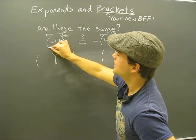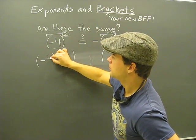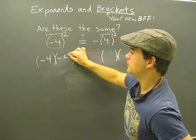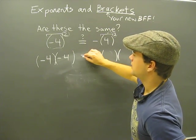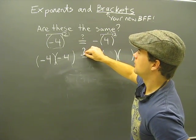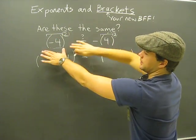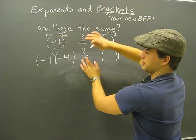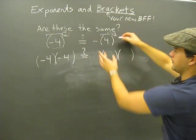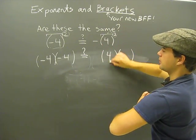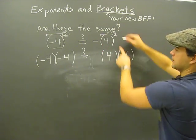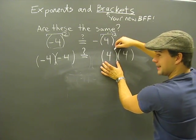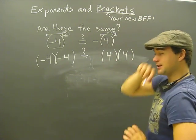First of all, we'll start on this side. Inside the brackets, we have a minus 4. We're asking ourselves, are these the same, right? Does this equal this? So I'm just going to show a question mark there. Inside the brackets, we have just a 4. And so we'll put it twice, because the 2 means that we're doing it times by itself twice.